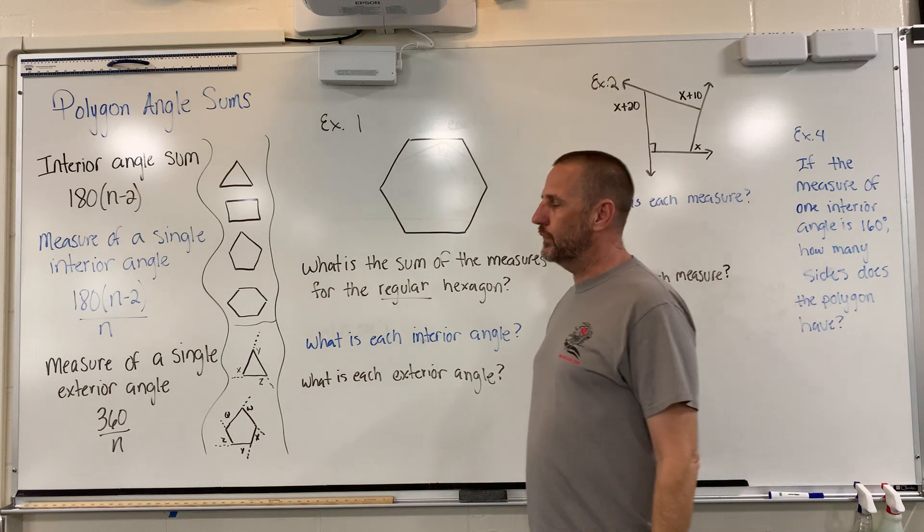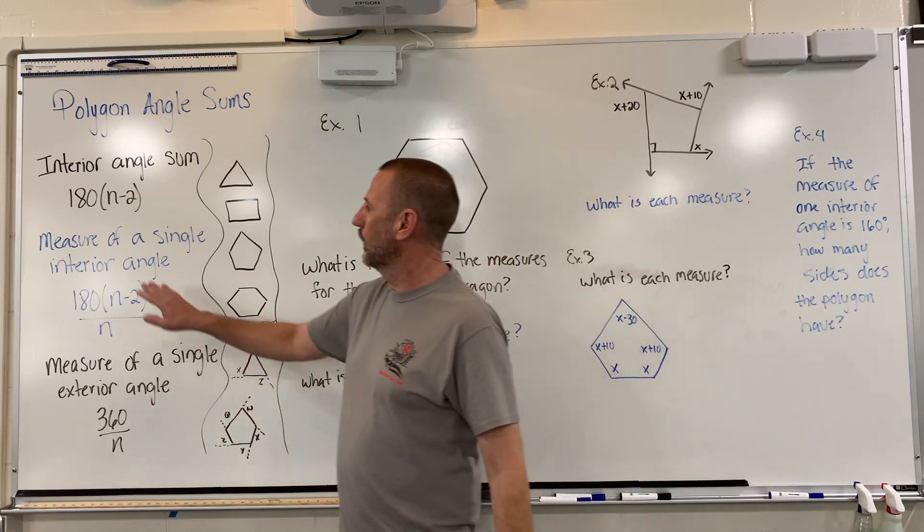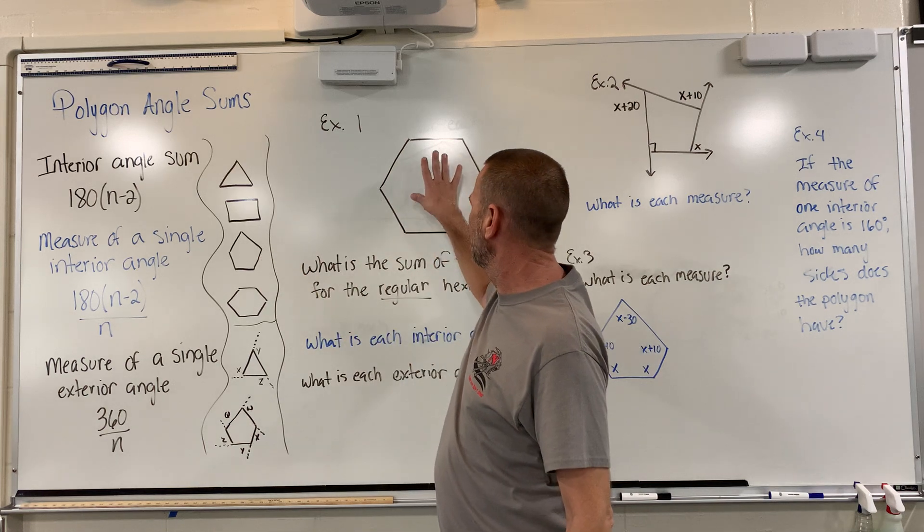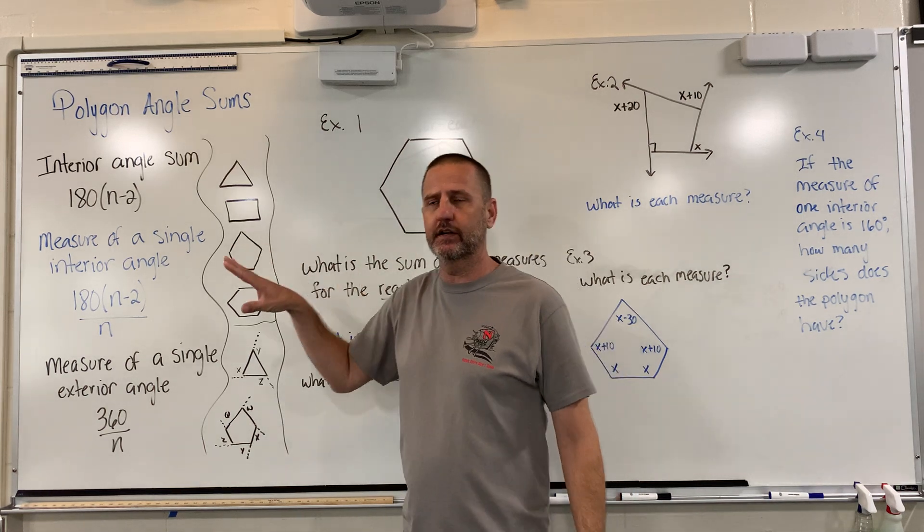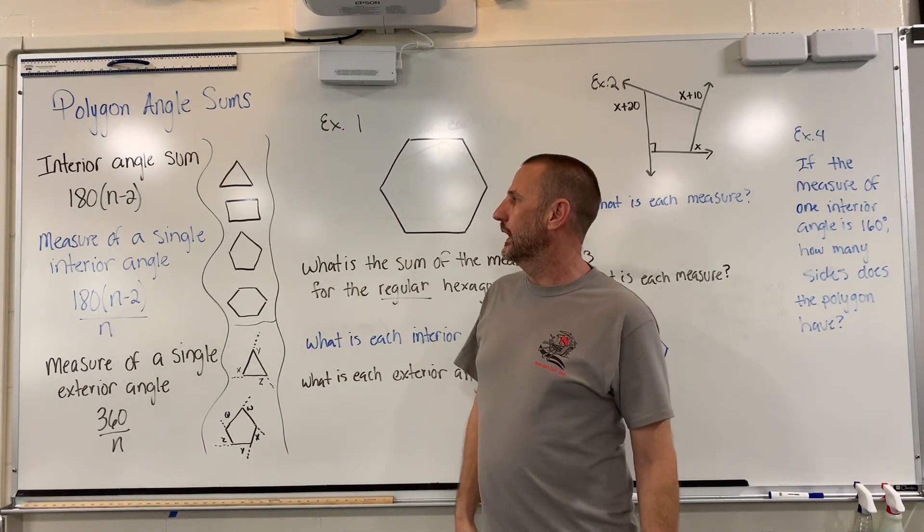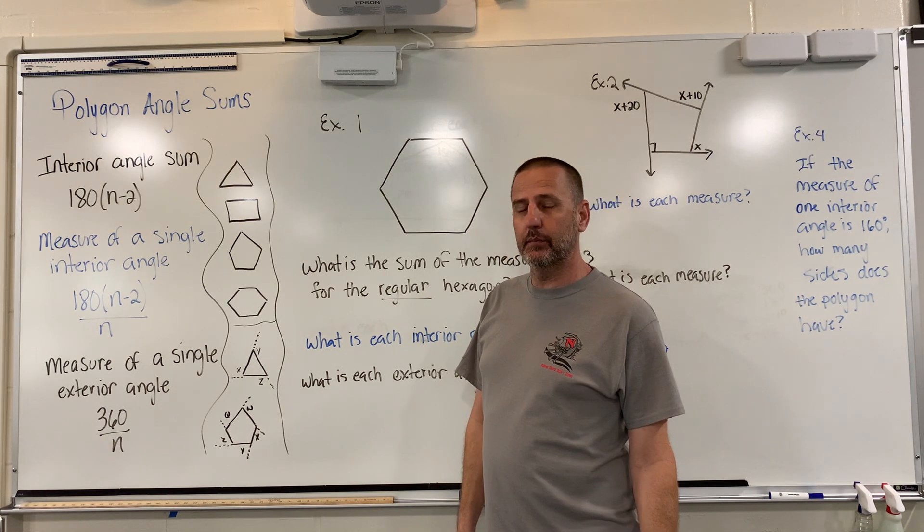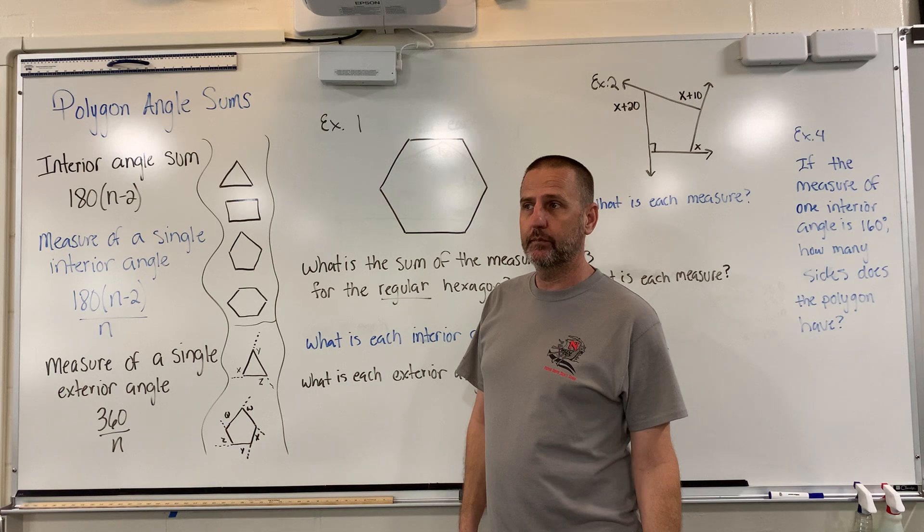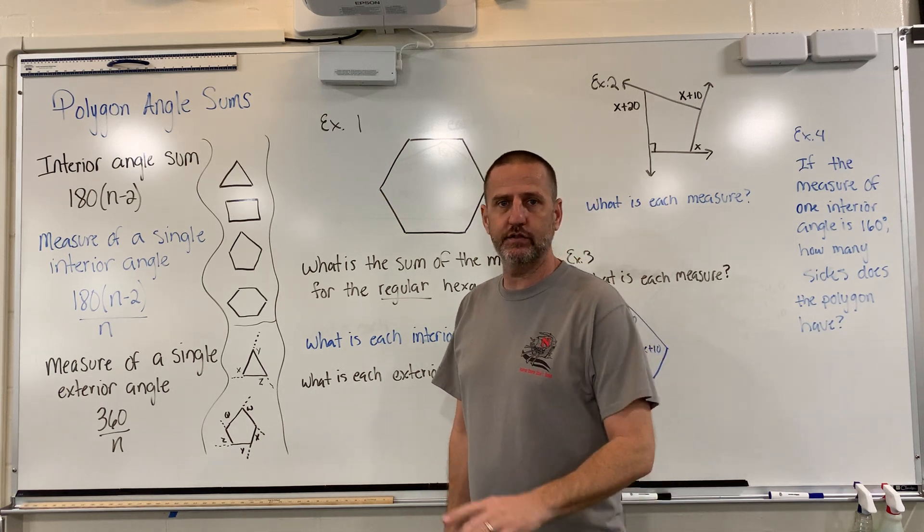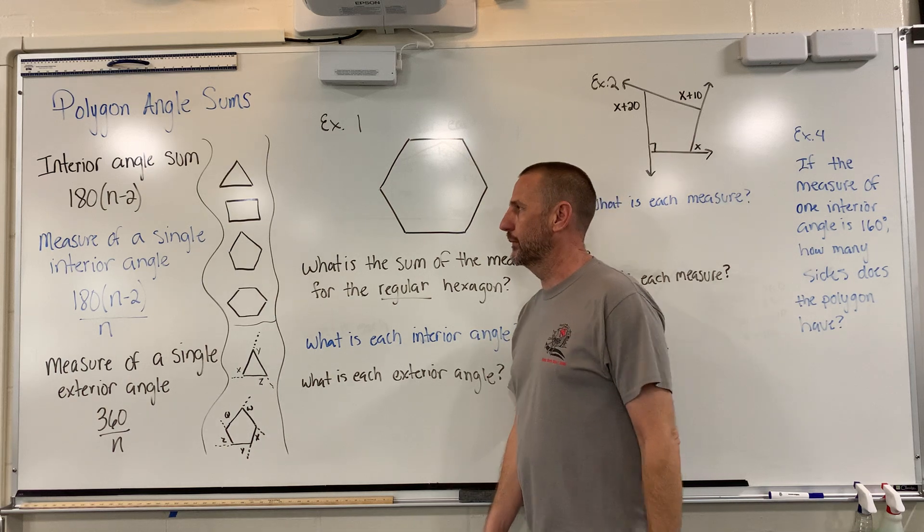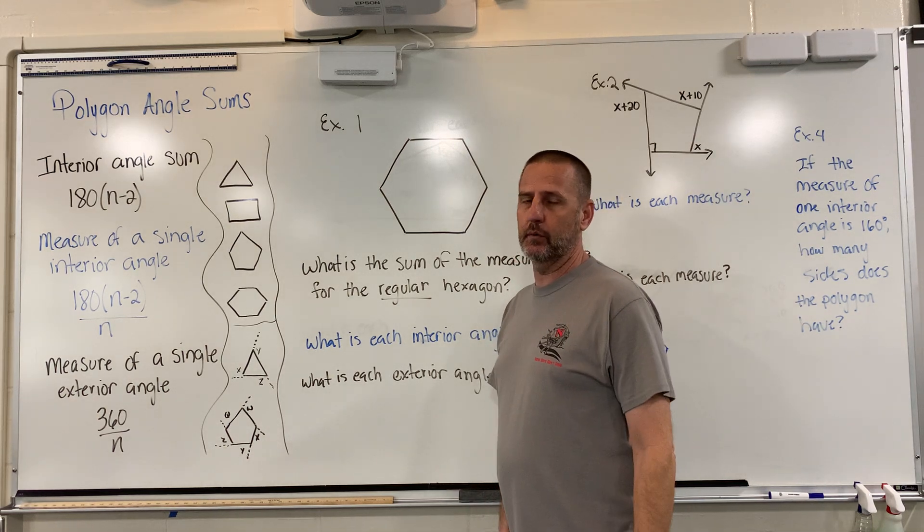So the first formula I'm going to go over with you is interior angle sum, meaning the combination of all the angles on the interior of any shape. And that formula is 180 times the number of sides minus two. Now you might wonder where that minus two comes from, and I'm going to explain that as quickly as I can. I think it's a really important thing to go over.